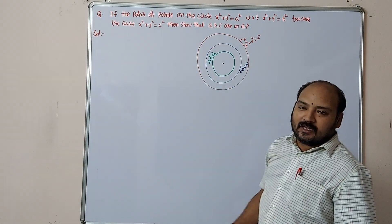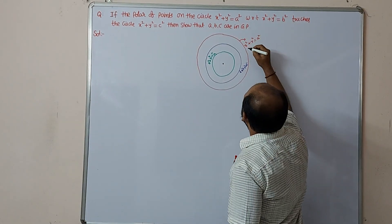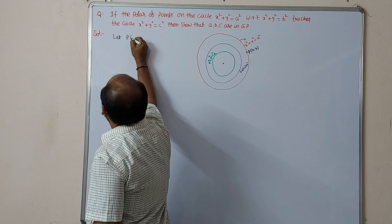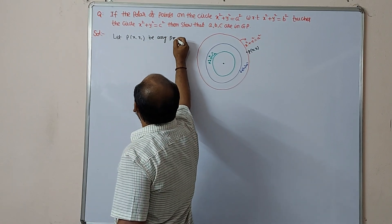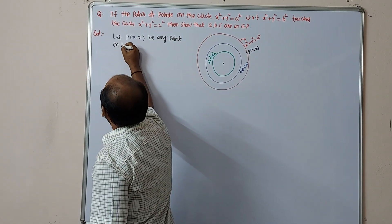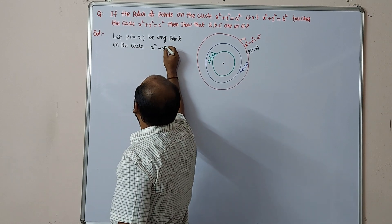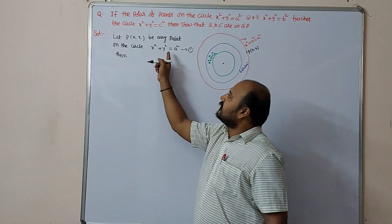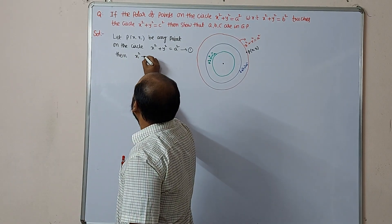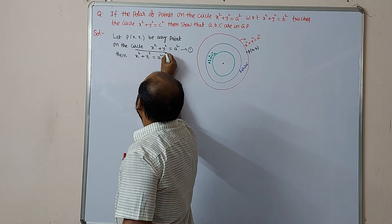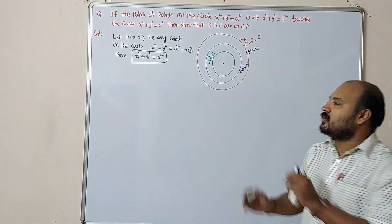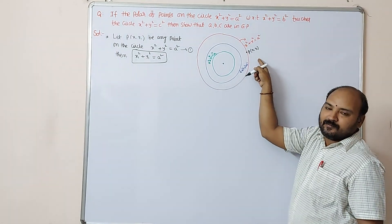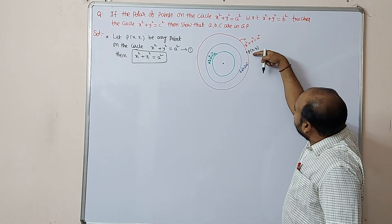Step 1: Let P(x₁, y₁) be any point on the circle x² + y² = a² — keep this as equation (1). Since P lies on this circle, we have x₁² + y₁² = a². We will use this result in the coming steps.